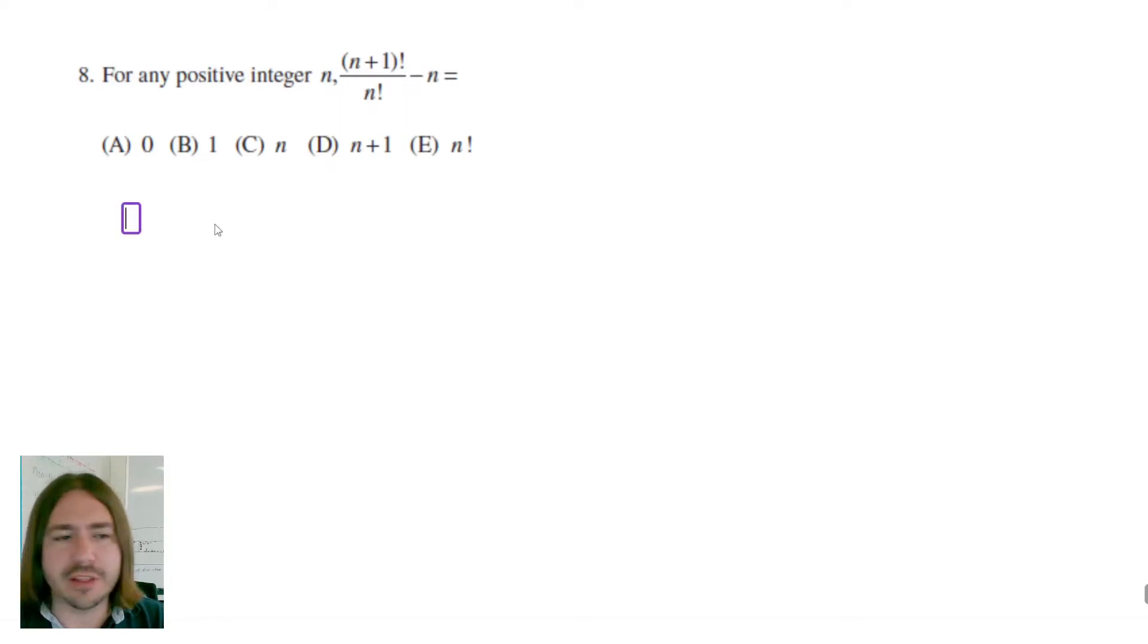So in case you've never seen this before, anytime you've got an n with an exclamation point, or really any number with an exclamation point, what that means is that you multiply that number by every number that came before it.